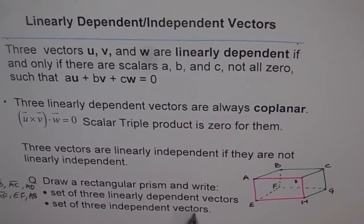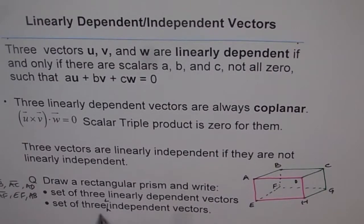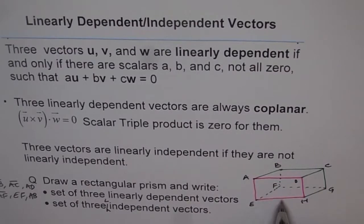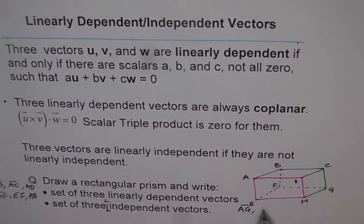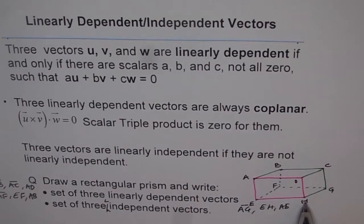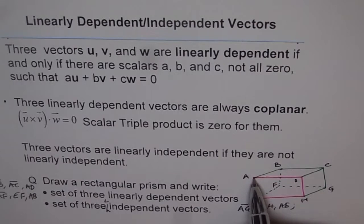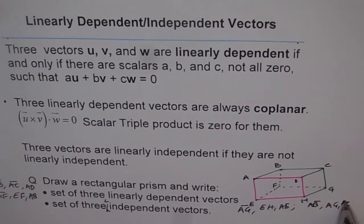Now if we have to write a set of three linearly independent vectors, we try to select vectors from different planes. For example, taking AG as one vector, then EH, and AE — these are in different planes, so they cannot form a linearly dependent set and are called independent vectors. Similarly, another set could be AB, AG — adding a diagonal which is not in that particular plane — giving us vectors that are not in the same plane and therefore form independent vectors.